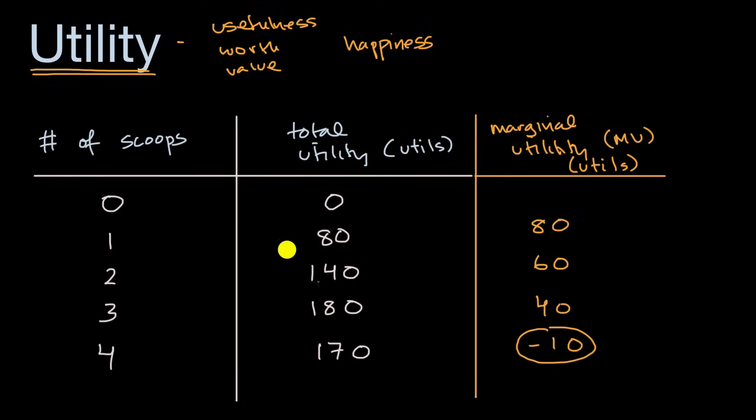You have this idea of utility, total utility. And we also looked at marginal utility. And you see in this example, and this is typical, that marginal utility typically decreases as you get more and more units of that thing. And in future videos, we're going to use this framework of utility, total utility, marginal utility, to think about how folks might make rational decisions to optimize their total utility.